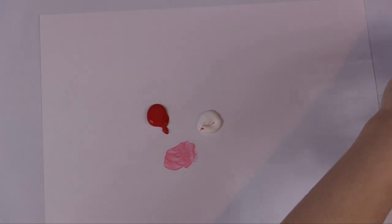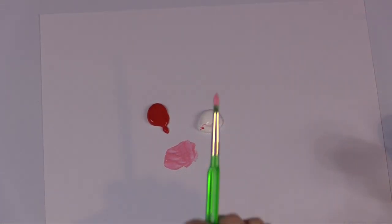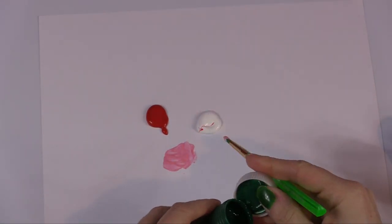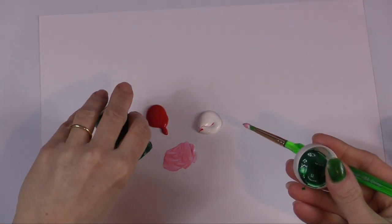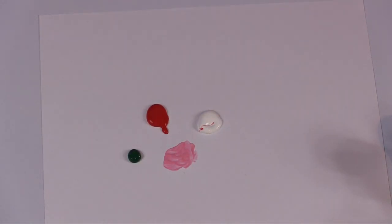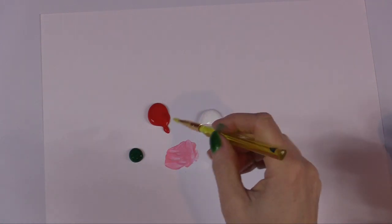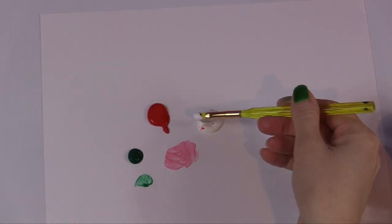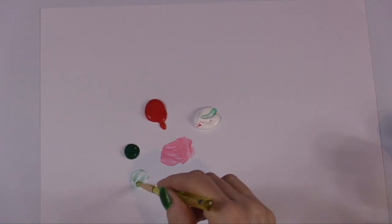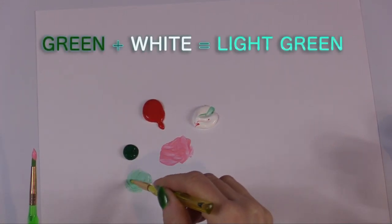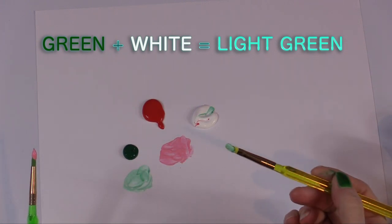What happens if we do that with green? Let's try it. We'll take our green and we'll dump a little on there. And let's try a little green here and grab a little white, mix it around. We're making a light green color. Isn't that pretty?